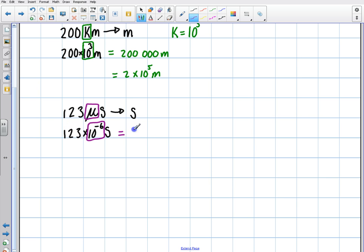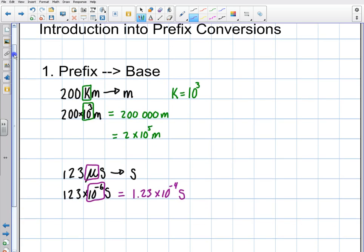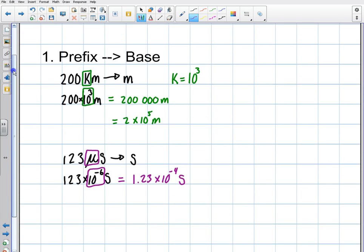We can say 1.23 times 10 to the minus 4 seconds if you want to do it that way. But it's the same thing. Just a one-step process here. There's nothing magical about it. You don't need to be doing traditional dimensional analysis.